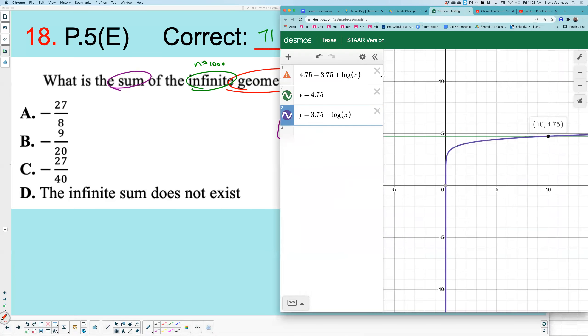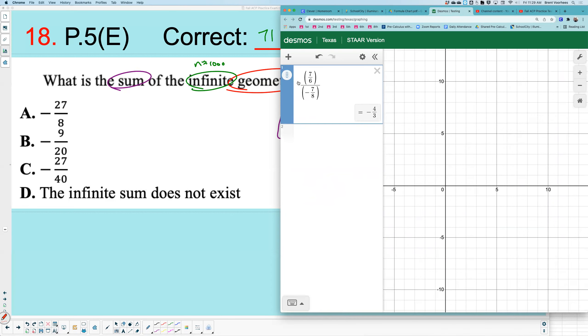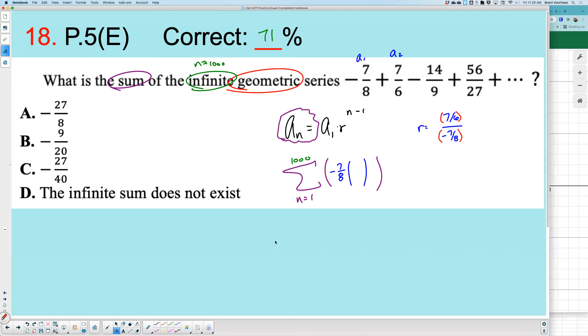So let's go to the Desmos calculator here. And I'm going to type in, in parentheses, 7 divided by 6. And then I'm going to divide that by parentheses, negative 7 divided by 8. And so there it is as a decimal. I'm going to click the fraction button. It's negative 4 thirds. Or you could use negative 1.333, where those just repeat over and over.